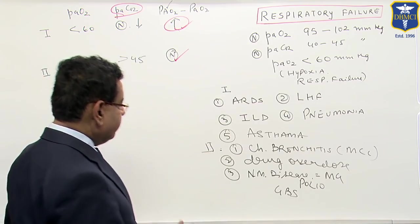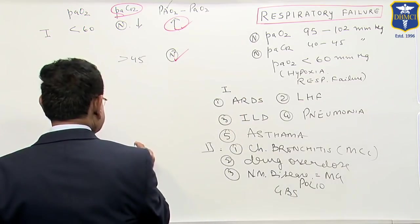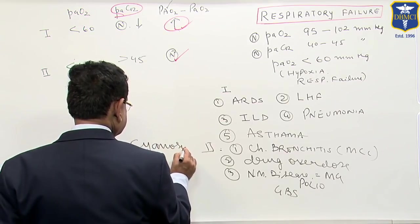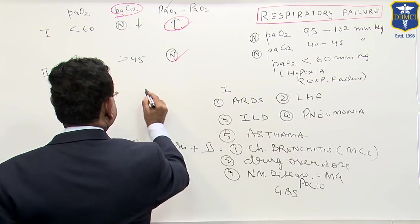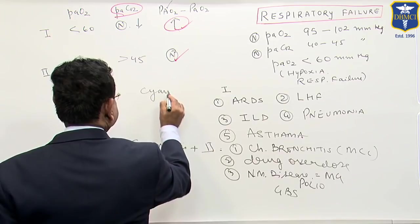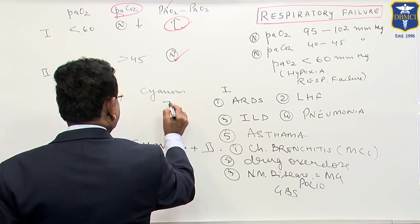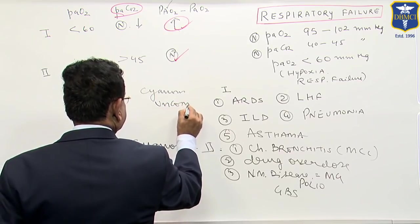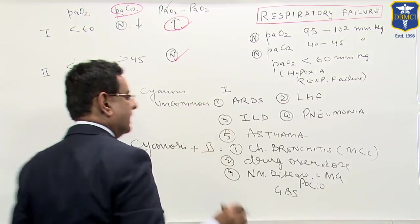In type 2 failure, cyanosis is usually there. Here in type 1, cyanosis is not there or uncommon or it occurs in the late stages.